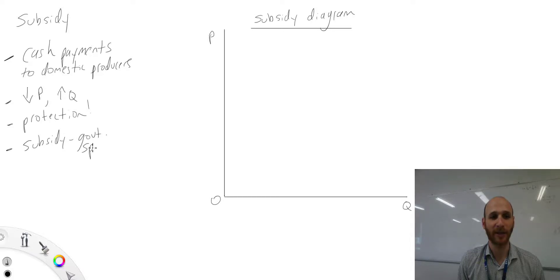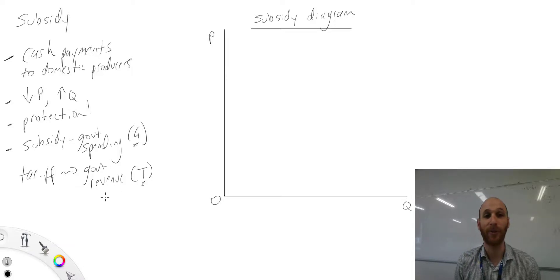One thing that's also important to note is that a subsidy is government spending - it is an example of G. The government has to allocate money to pay for the subsidy. If you think about different forms of protection, a tariff for example is a form of government revenue which is T. Now it's not primarily used to earn revenue, but that is the impact of a tariff.